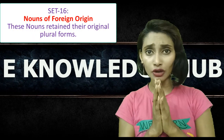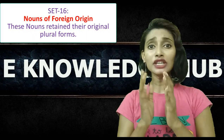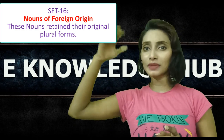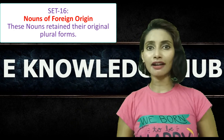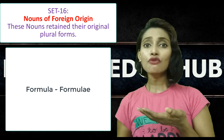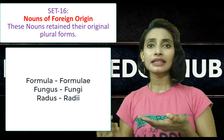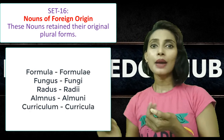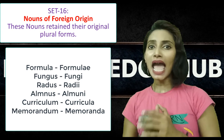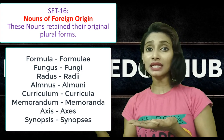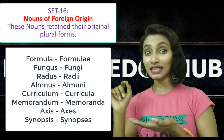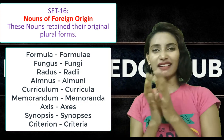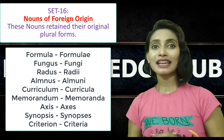And let's move to our 16th and last method. There are some words in English which are of foreign origin. While making plural forms, their original forms are retained in English too. They are: formula, formulae; fungus, fungi; radius, radii; alumnus, alumnae; curriculum, curricula; memorandum, memoranda; axis, axes; synopsis, synopses — here only the letter ending differs; criterion, criteria. So these are a set of examples of words of foreign origin.